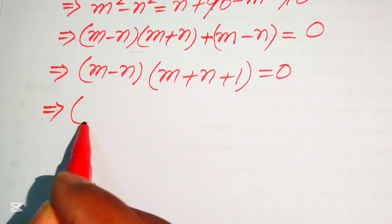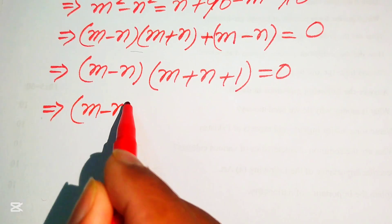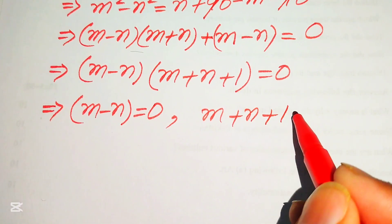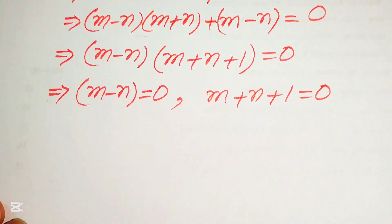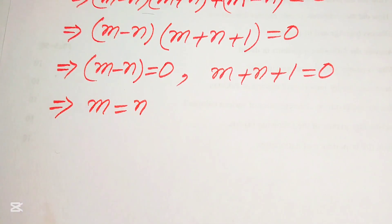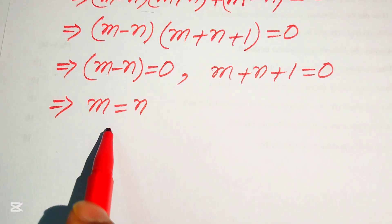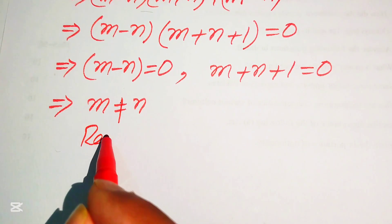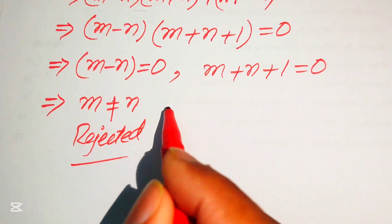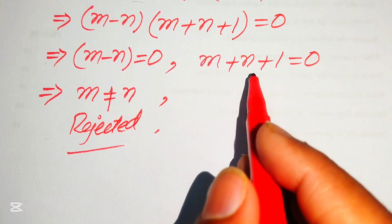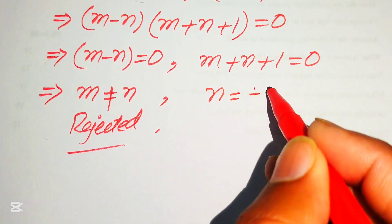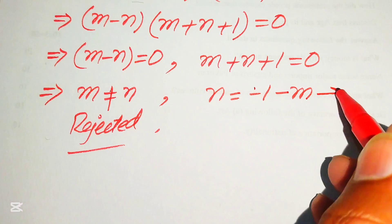We break this into two cases: Case 1 is m - n = 0, and Case 2 is m + n + 1 = 0. From Case 1 we get m = n, but since we require distinct values, we reject this case. From Case 2 we move m and 1 to the right-hand side and get n = -1 - m, which we call equation 3.